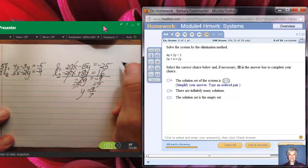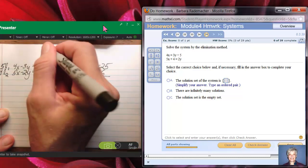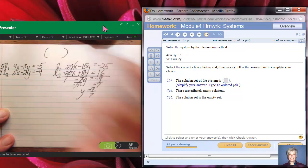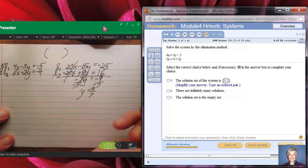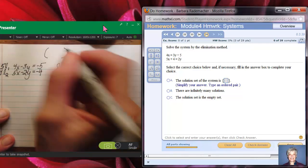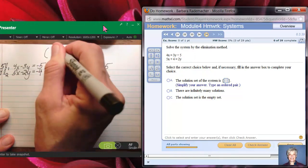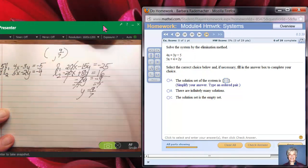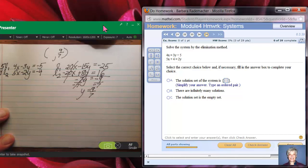So what do I know? I know that the solution, the point that is the point of intersection, so that's the solution of my system, is going to have y coordinate positive 9/7. That was cool. Let's do it again.